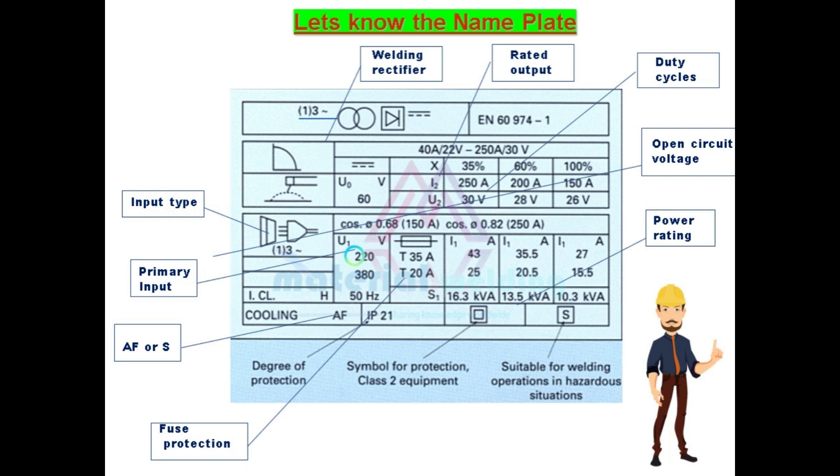This is input type. This is the primary input. This is type of cooling. AF means air fan cooling, or if it is S, it is self cooling. These are the fuse protection.